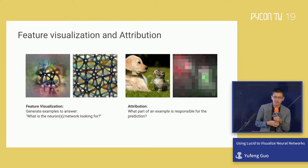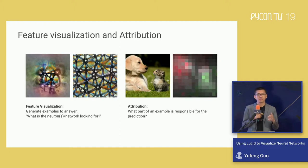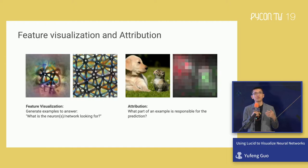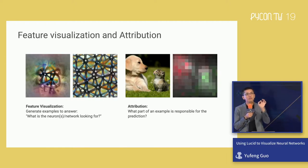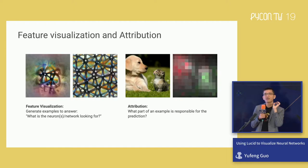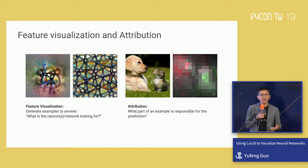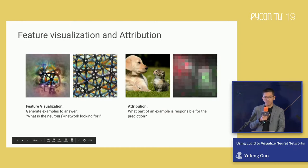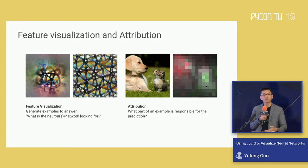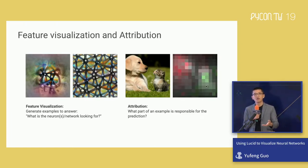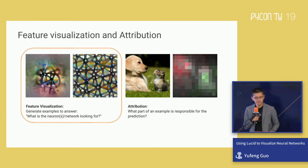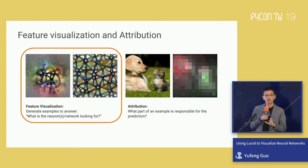For images within explainability, there are two large divisions. One is called feature visualization — understanding the internals of a network and what excites a particular neuron, channel, or layer. On the other side, we have spatial attributions, where we consider what parts of an image — like the dog face or cat area — are more important to the final prediction. For the first part of the talk, we'll focus on feature visualization.